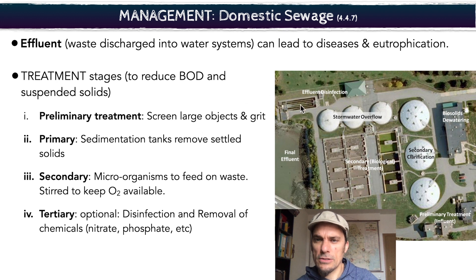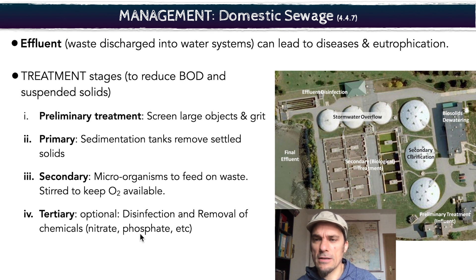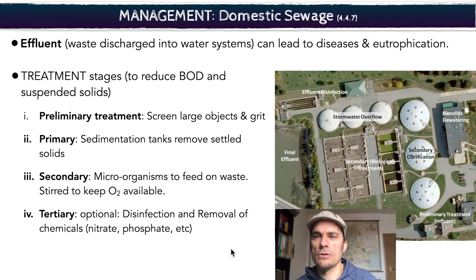Here's a tertiary treatment over here. So effluent disinfection — you can have disinfection for pathogens, for example. You can also have removal of chemicals if there's high nitrate or phosphate content in that water, because you don't want those nitrates and phosphates moving into the water system, as that will cause eutrophication.